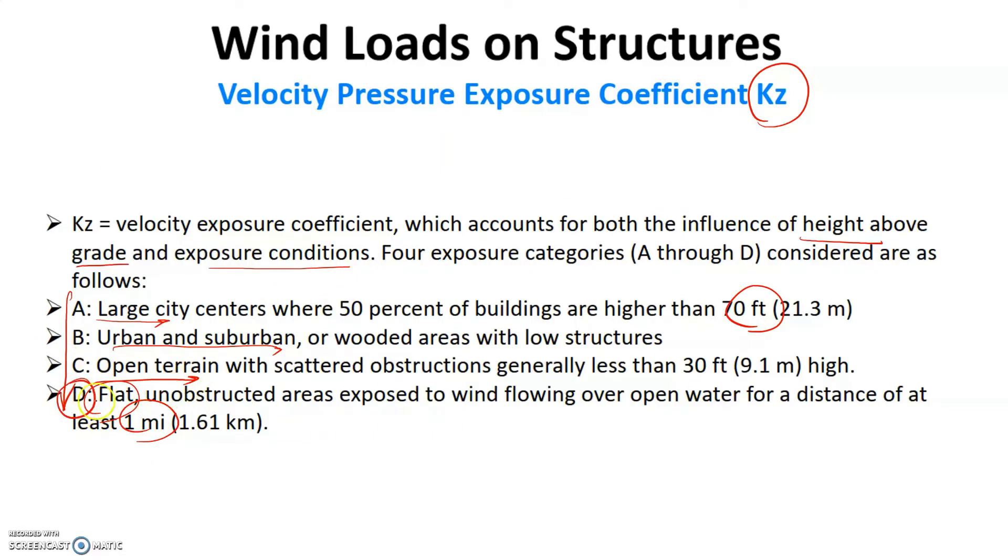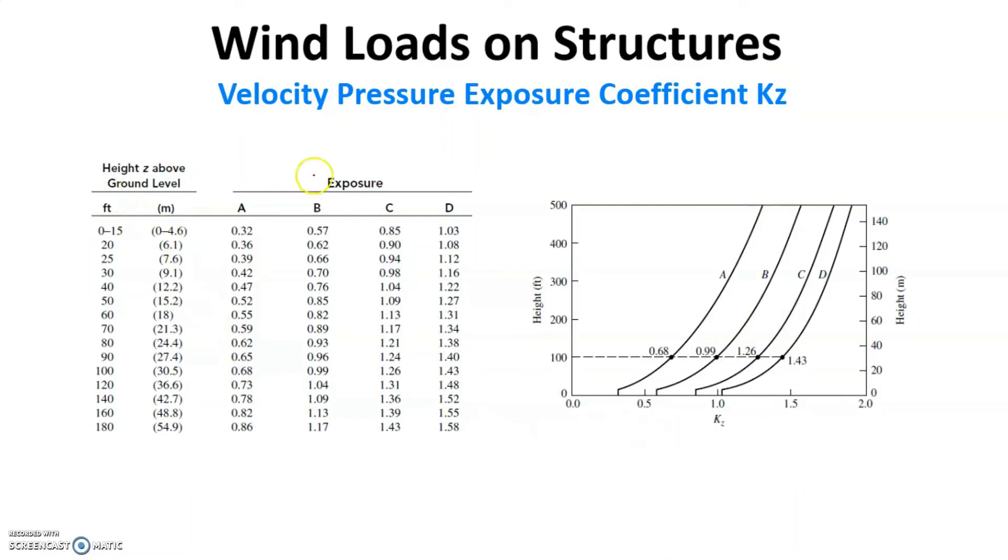You can see that case D is most critical because it is a plain surface with a single building exposed to all the wind. However, if you are in a city, you have some buildings around your main structure, so the wind gets dissipated as it passes through these buildings, making the impact lesser in a city.